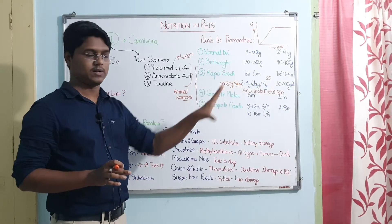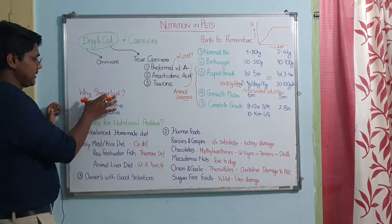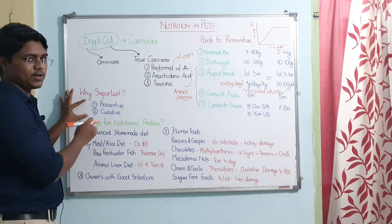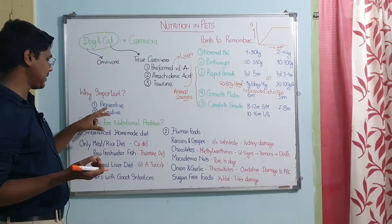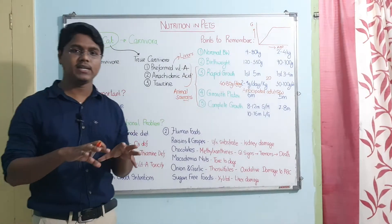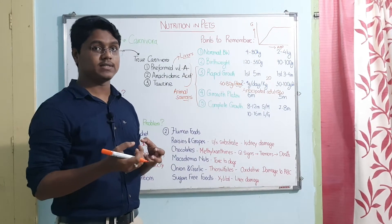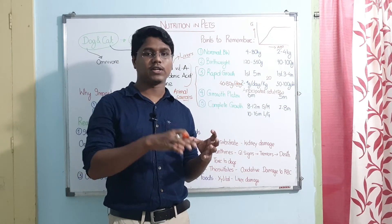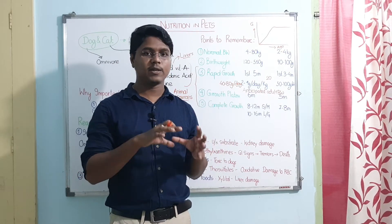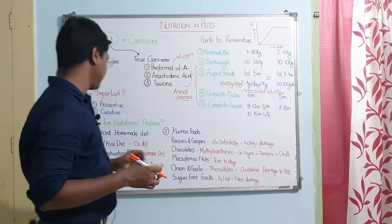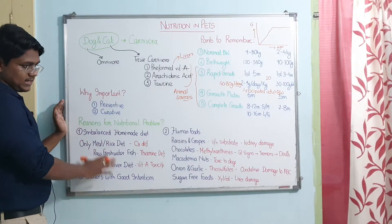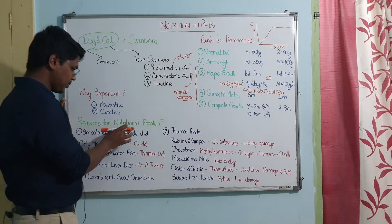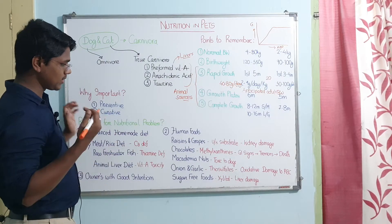During the growth phase, animals need high protein, high fat, and high energy — everything in high amounts, so take special care during this period. Nutrition is important for two reasons: preventive — it can prevent deficiency diseases and metabolic diseases — and curative — good nutrition improves the response to treatment so the animal heals better.